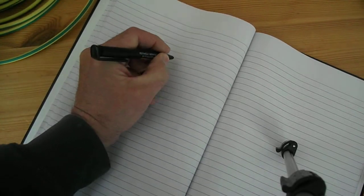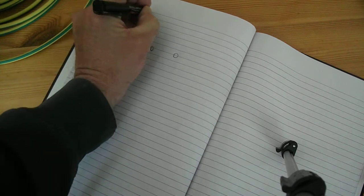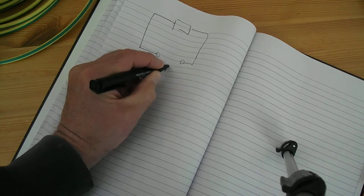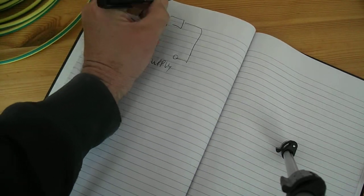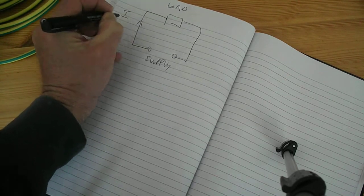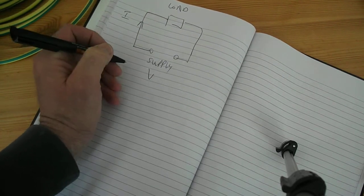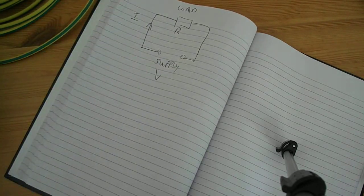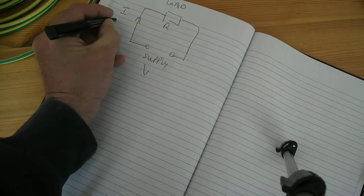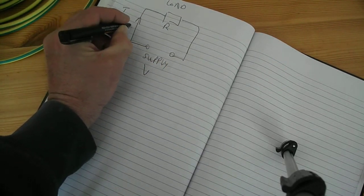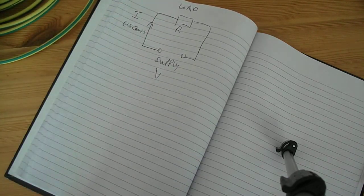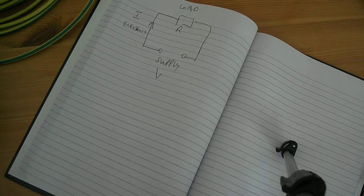If we just look at our basic circuit which we are familiar with, a circuit consists of a supply and it consists of a load. We have current I flowing through there, the supply voltage V and the resistance is the load. And we know that it is electrons flowing around our circuit to produce that current.